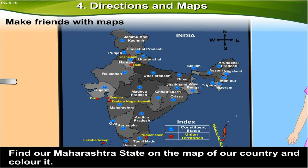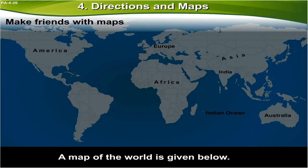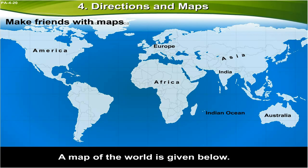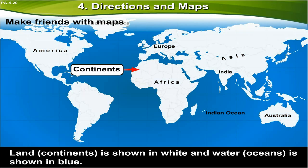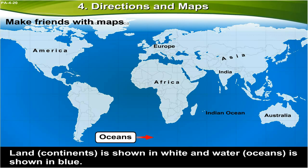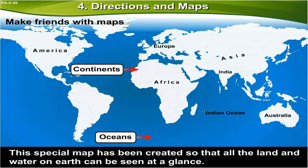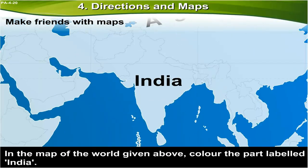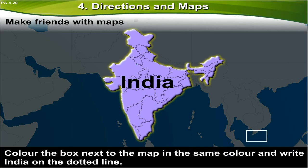Find our Maharashtra state on the map of our country and color it. Here is Maharashtra — let's color it. A map of the world is given below. Land, that is continents, is shown in white. Water, that is in the form of oceans, is shown in blue. This special map has been created so that all the lands and water on earth can be seen at a glance. In the map of the world given below, color the part labeled India. Color the box next to the map in the same color and write India on the dotted line. This is our country.